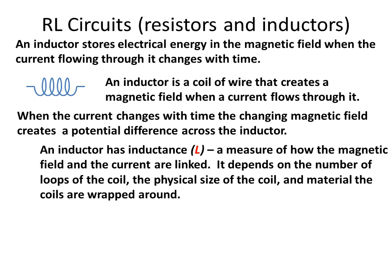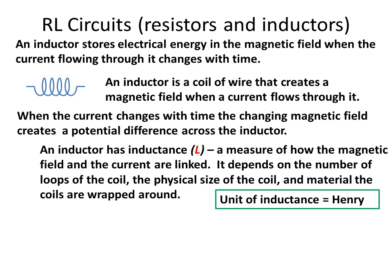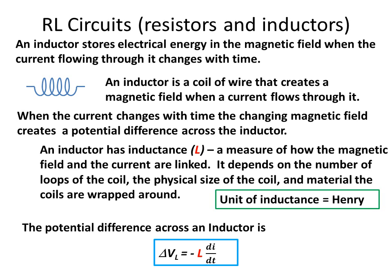Inductance depends on the number of loops of the coil, the physical size of the coil, and the material the coils are wrapped around. The unit of inductance is a Henry. The potential difference across an inductor is given by delta V sub L equals minus L, the inductance, times the time derivative of the current.